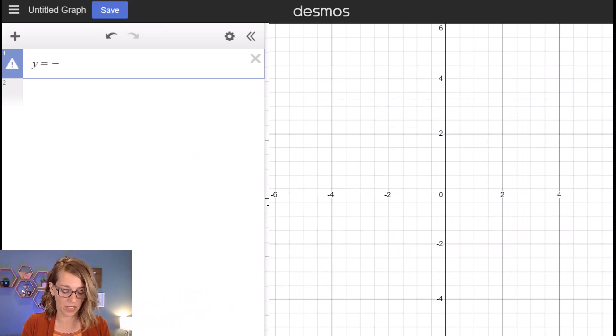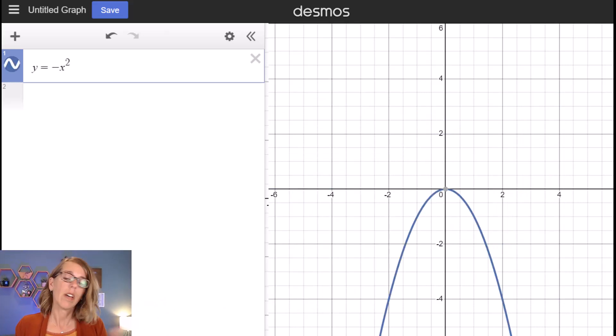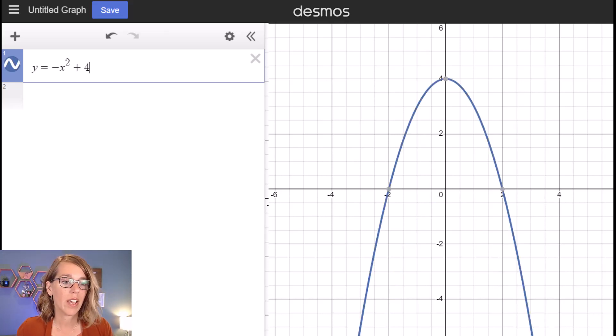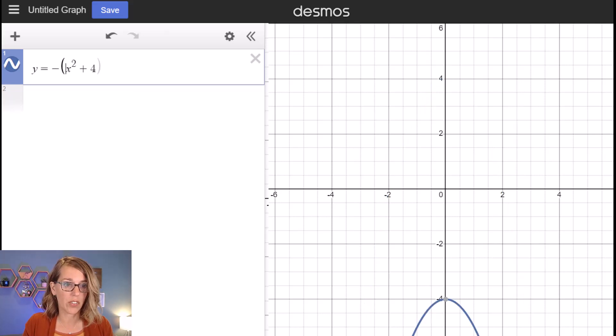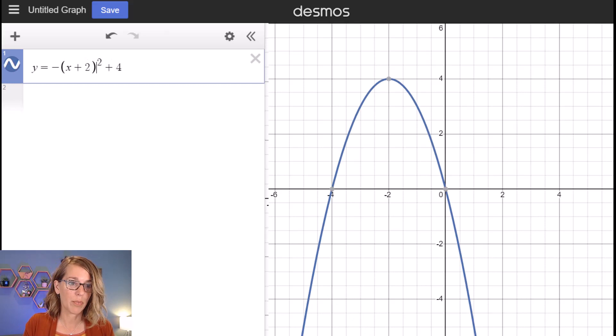So I want a quadratic that's been flipped upside down and I also want it to be up four. Then let's go ahead and shift this one to the left. So I want to change that x, parentheses, and then I want to change it to the left so I want to do plus two and then parentheses. Now to get that power two I use the caret key which is right above my number six.